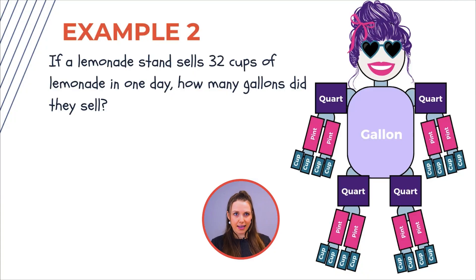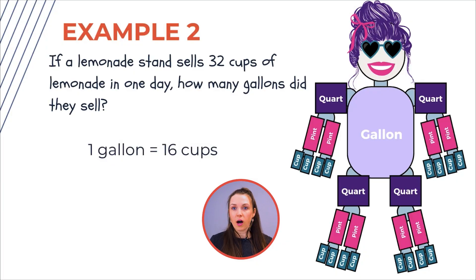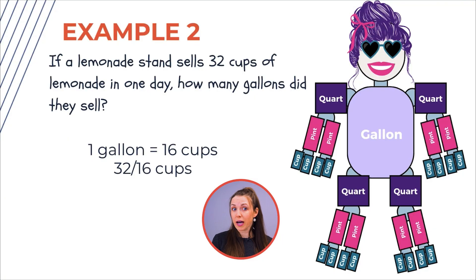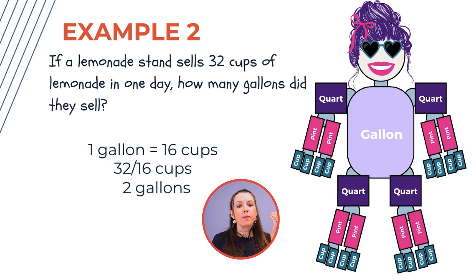Let's do another one with Gallon Gal. If a lemonade stand sells 32 cups of lemonade in one day, how many gallons did they sell? We're going all the way from cups to gallons. Gallon Gal has 16 cups, so 16 cups is one gallon. When going from small to big, we divide. So 32 cups divided by 16 cups — there were two gallons of lemonade sold.